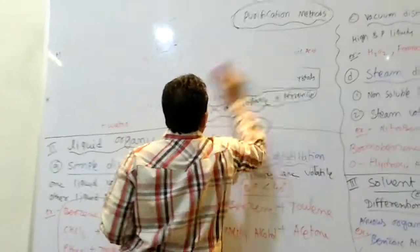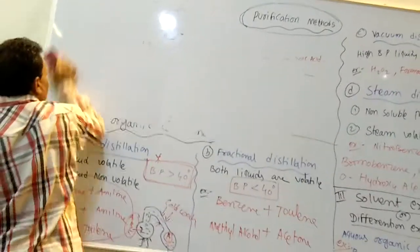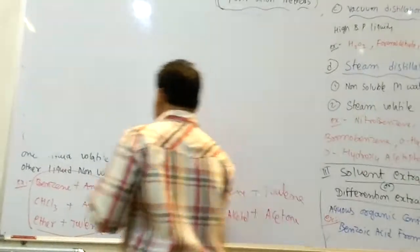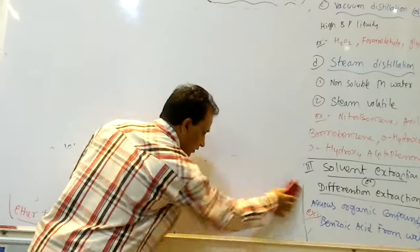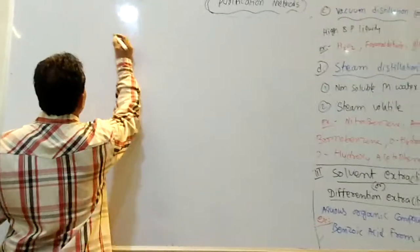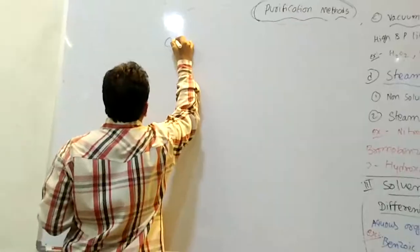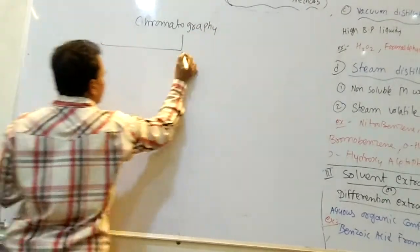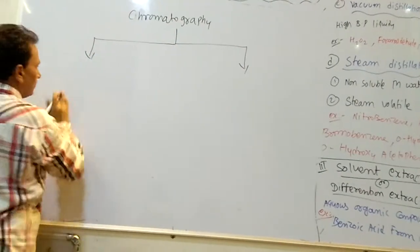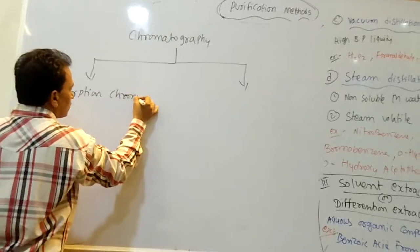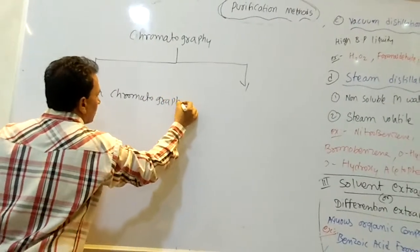The latest technology is chromatography. Chromatography means separation and purification of organic compounds on the basis of color. Chromato means color, graphy means writing. Chromatography is the latest technology and is now used to purify all organic compounds. Chromatography is of two types: adsorption chromatography and partition chromatography.